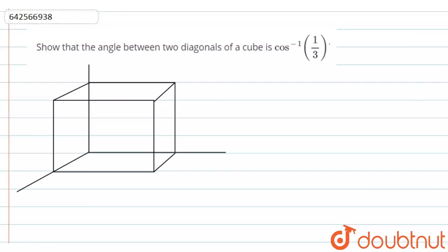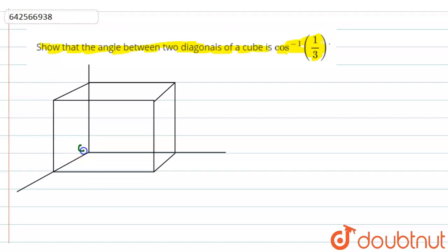Hello guys. In this question, we have to show that the angle between two diagonals of a cube is cos inverse of 1 by 3. So now we can just draw a cube. Consider this cube — O is the origin here.